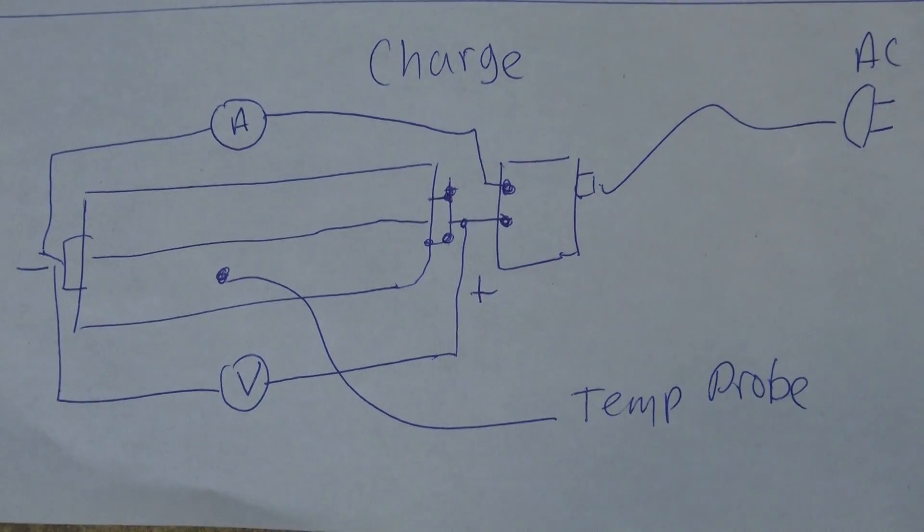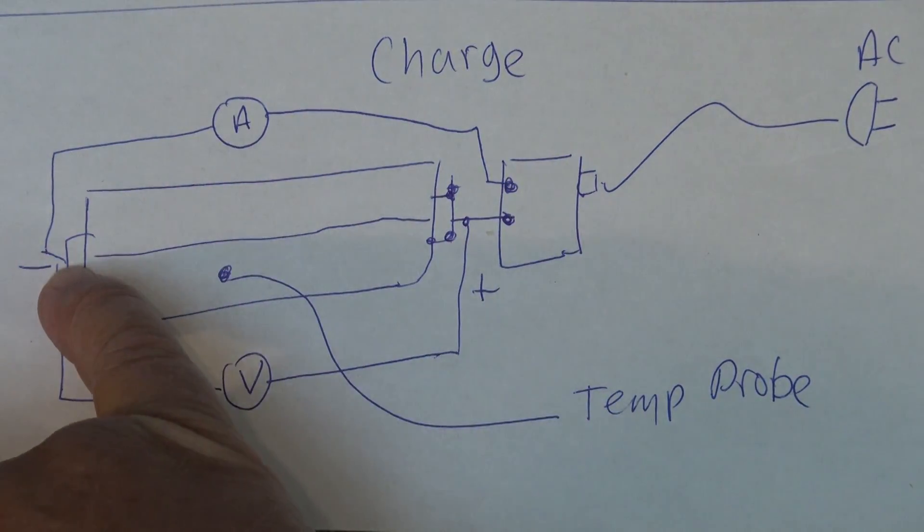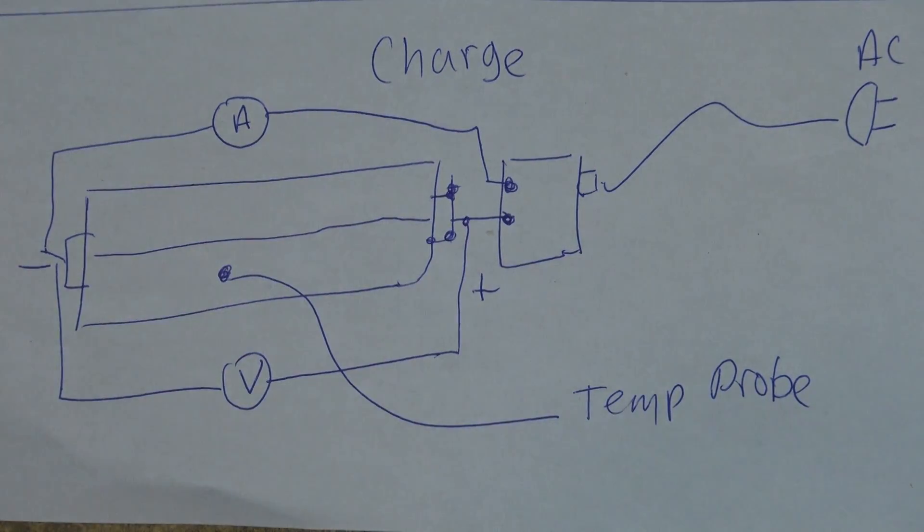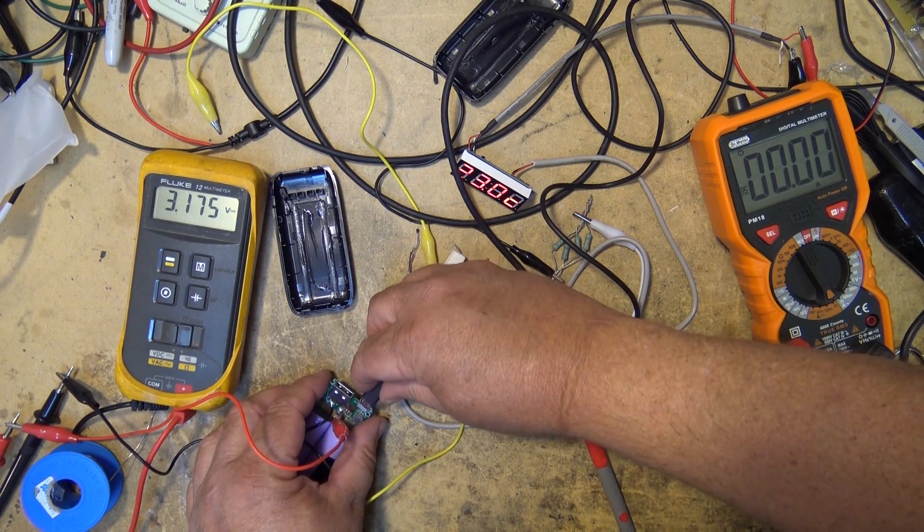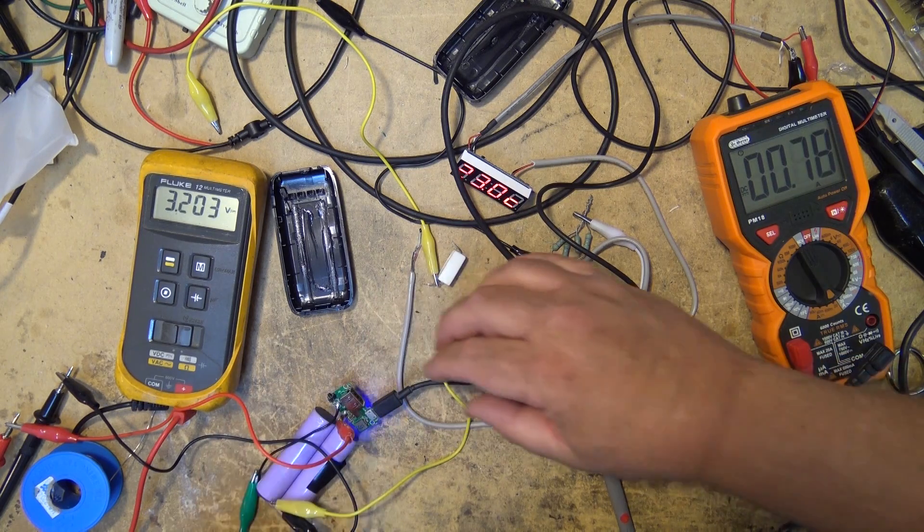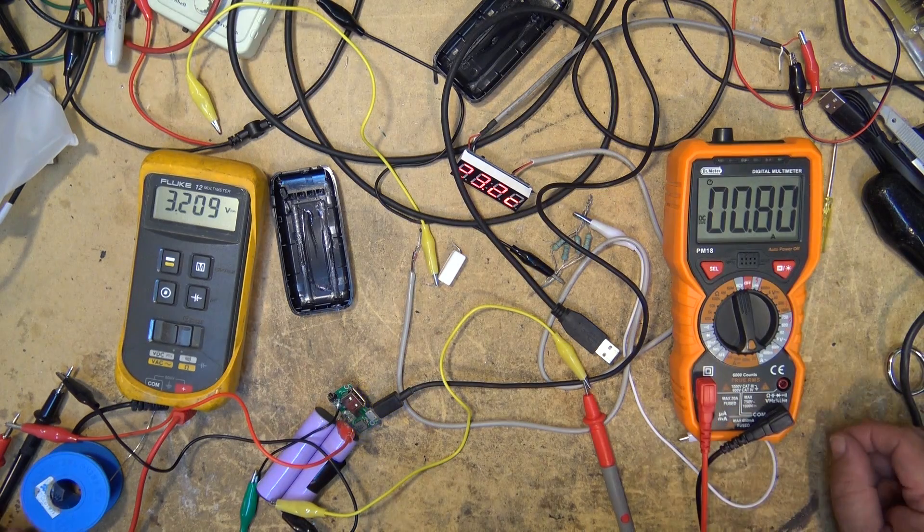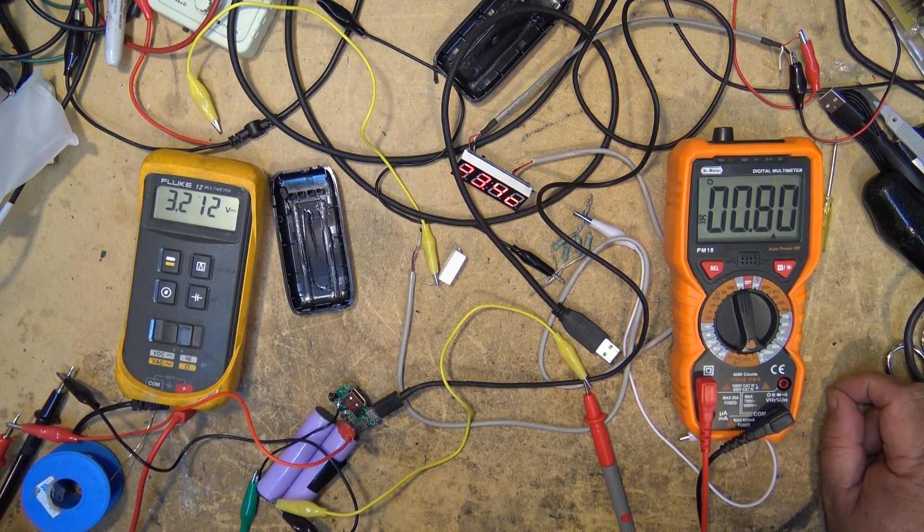For charging, slightly different configuration. This time I hook the ammeter up between the negative terminal of the charge controller and the negative terminal of the battery to measure the current that's actually charging the two cells, and we also monitor the voltage. Let's connect this up. The charging voltage is 3.2 and it's charging at 0.8 amps or 800 milliamps.